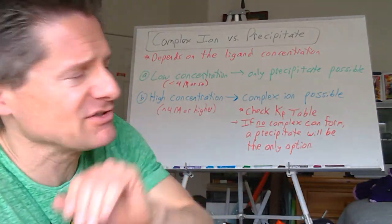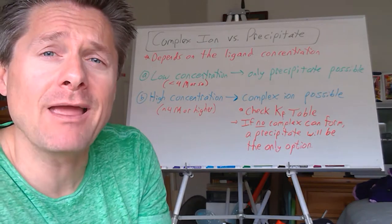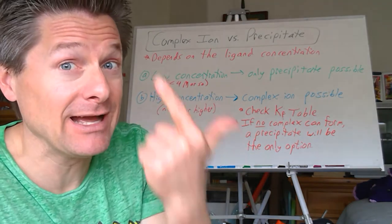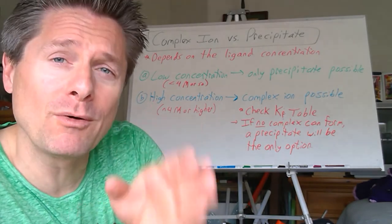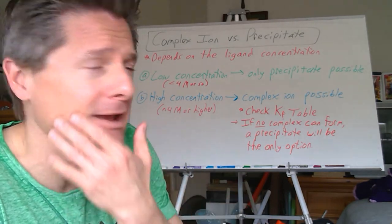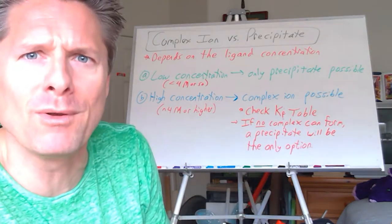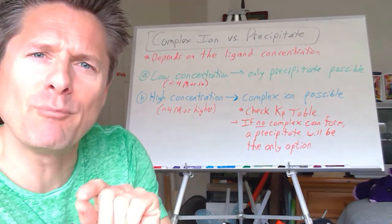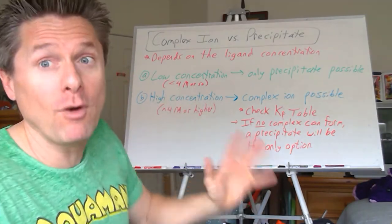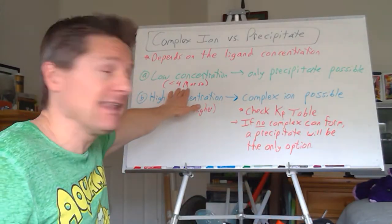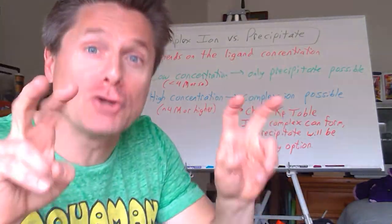How do you know if you have a complex ion versus a precipitate? It really comes down to the concentration of the species you're adding. To form a complex ion, you need excess of the ligand and high concentration. We're going to use about 4 molar as the breaking point — it's kind of a gray area. Anything less than 4 molar will be considered low concentration; 4 molar or higher will be considered high concentration.